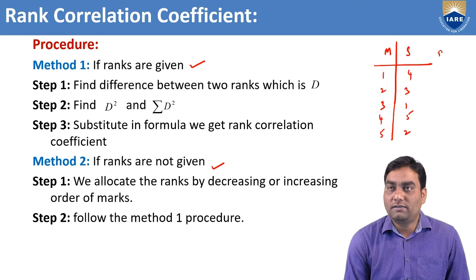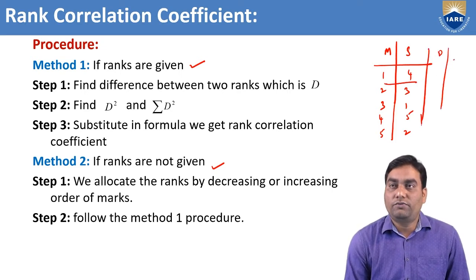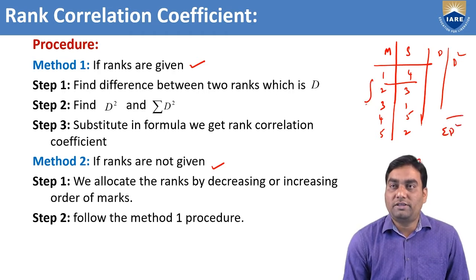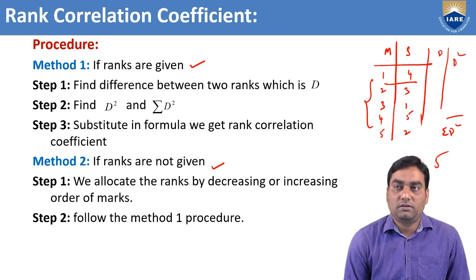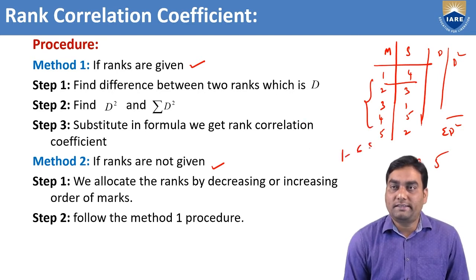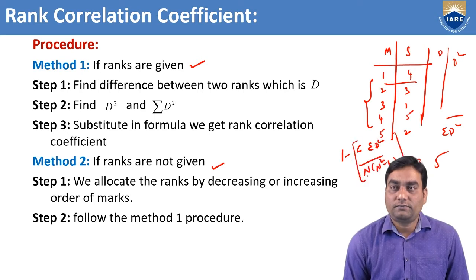You find out d — the difference between ranks. Then you find d square. Then add them: sigma d square. With n equal to the number of paired observations, substitute into the formula n into (n square minus 1) and we will get the answer.